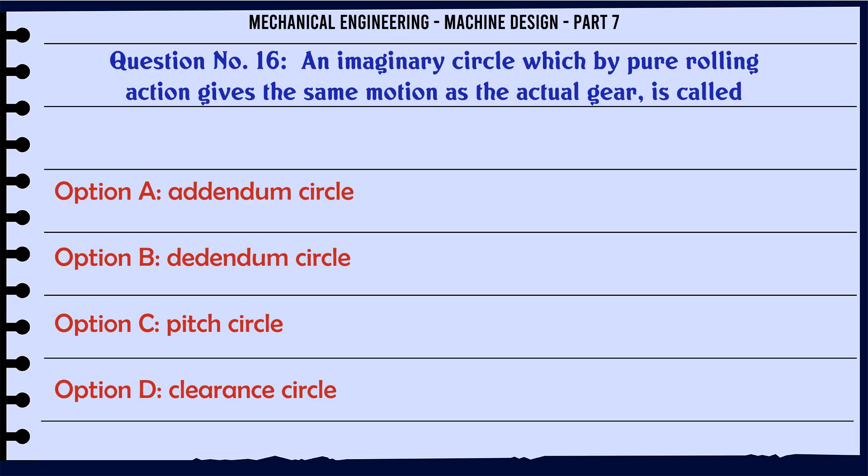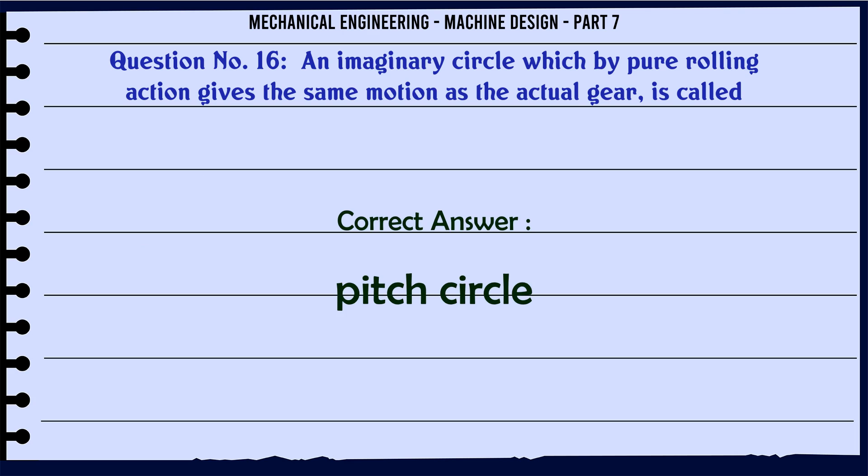An imaginary circle which by pure rolling action gives the same motion as the actual gear is called: a) addendum circle, b) dedendum circle, c) pitch circle, d) clearance circle. The correct answer is: pitch circle.